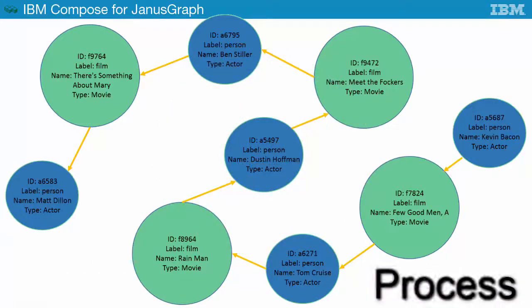The traversal is the process for using the data structure to answer questions. It visits all the elements in a graph and checks and updates their values, usually in a specific order.